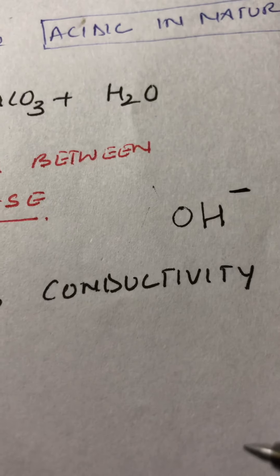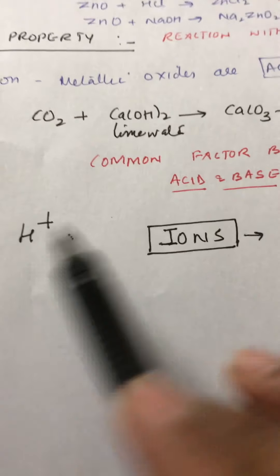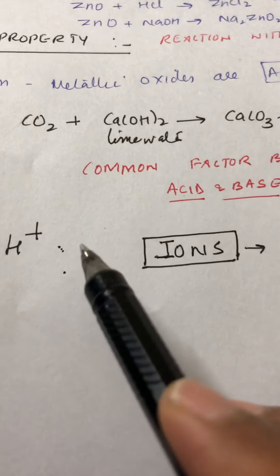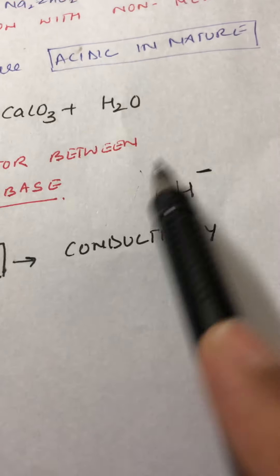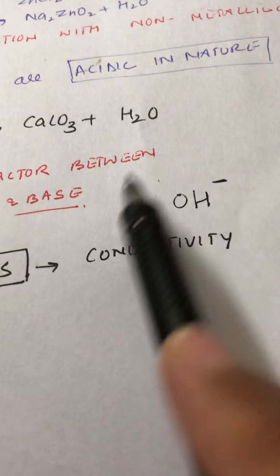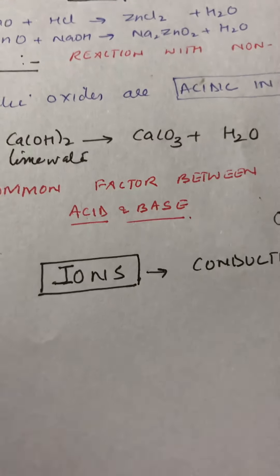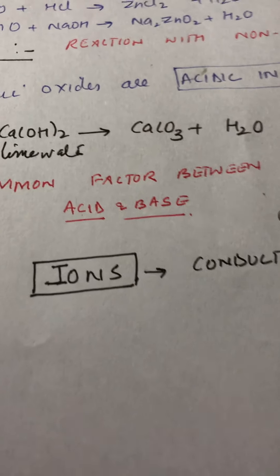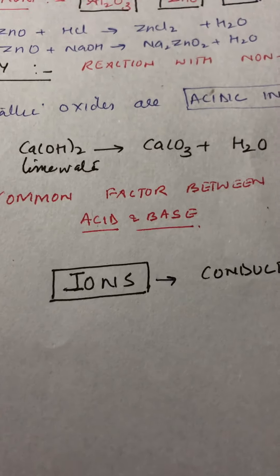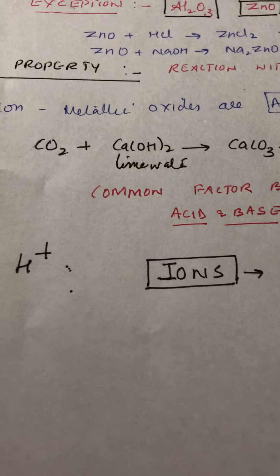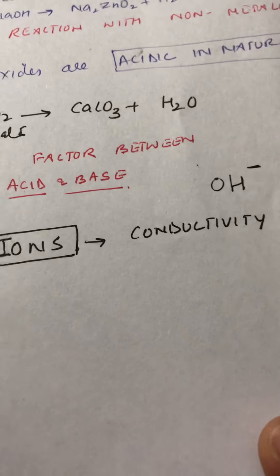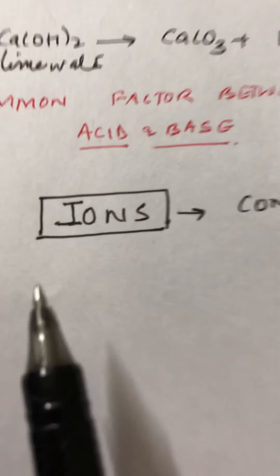Similarly, when bases are dissolved in water, the OH⁻ ion is the common ion in all basic solutions. So acidic solutions contain ions and basic solutions also contain ions — this is what is common between acids and bases.